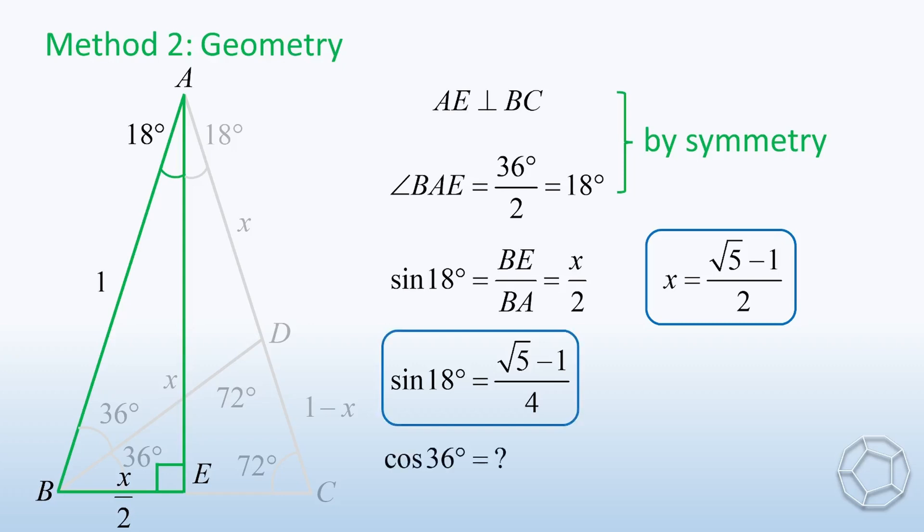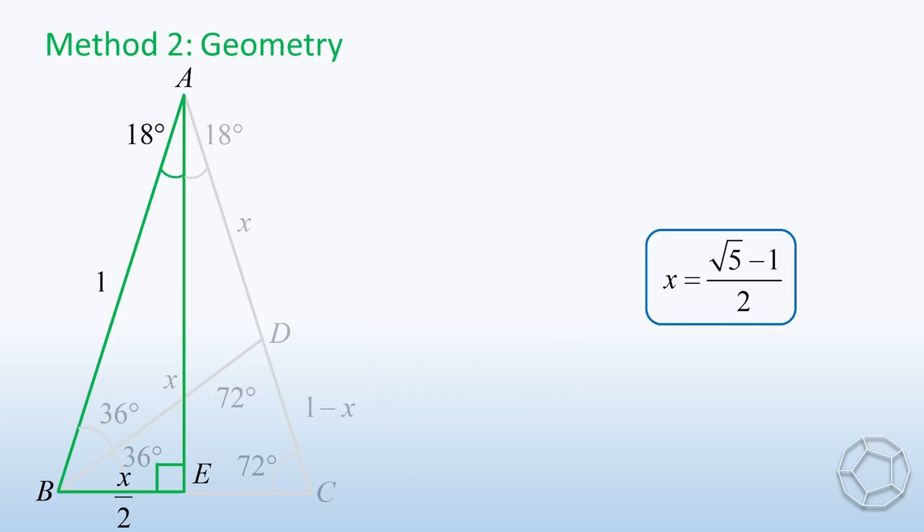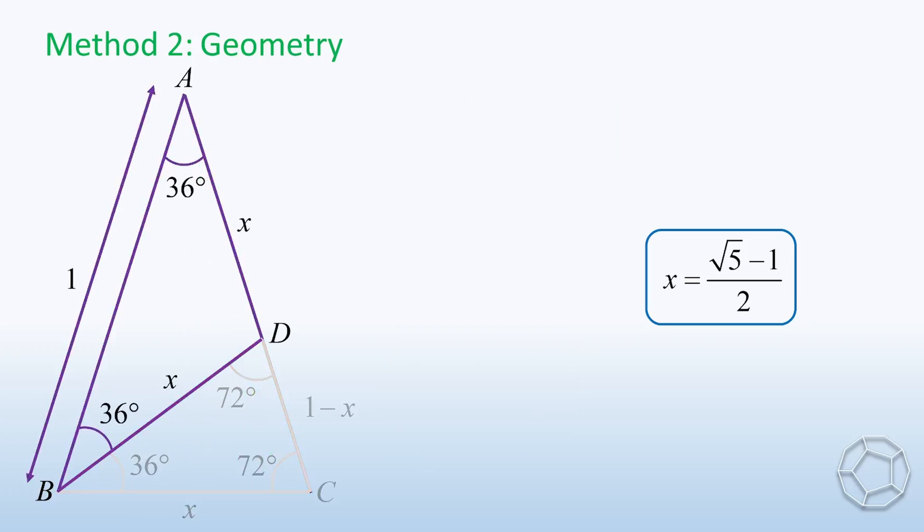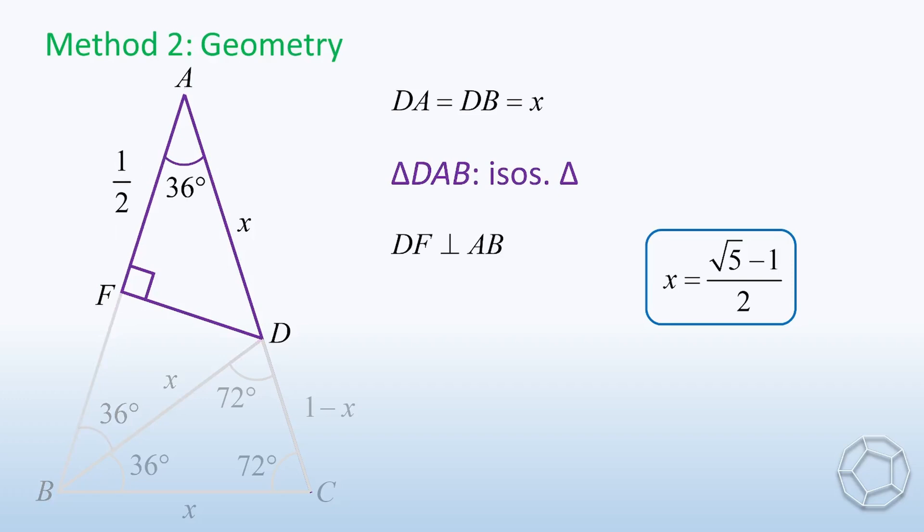How about cosine 36 degrees? Let's look at the purple triangle. We let F be the midpoint of AB and construct DF, so AF is equal to 1 over 2. Because DA is equal to DB, that is, triangle DAB is isosceles, so DF is perpendicular to AB. We look at half of it.